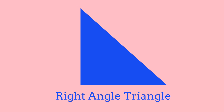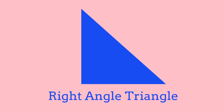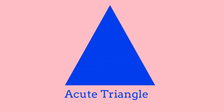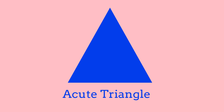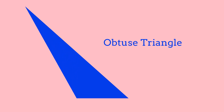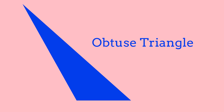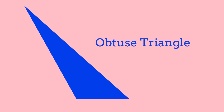Just to refresh your minds, let's see how all three of these triangles look. A right angle triangle has one angle that is 90 degrees, or two sides that are perpendicular. An acute triangle has three acute angles, and all three are less than 90 degrees. Finally, an obtuse triangle has one obtuse angle and two acute angles, where the obtuse angle is over 90 degrees.